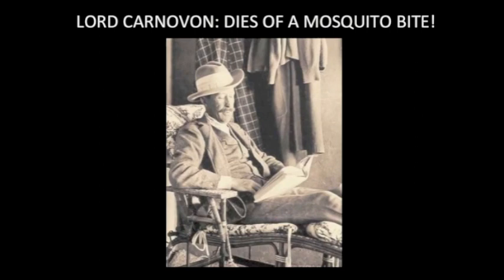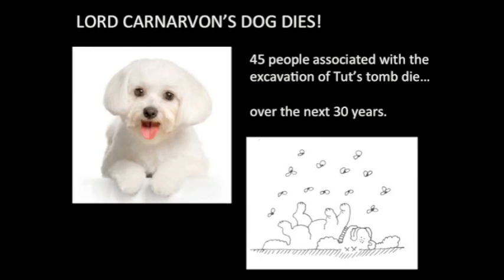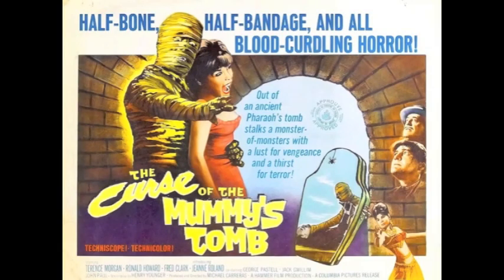And that's not all that came to an end. Lord Carnarvon died of a mosquito bite — nobody dies of a mosquito bite. They opened the tomb, and before they could get to the body of Tut, Lord Carnarvon was dead. Lord Carnarvon's dog also died. And 45 people associated with the excavation died over the next 30 years — with an average age of 72. There must be a curse to the mummy's tomb.